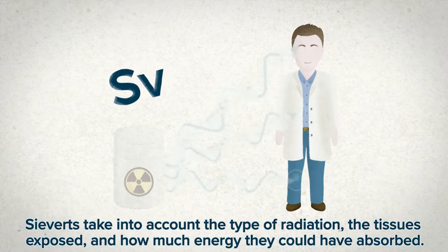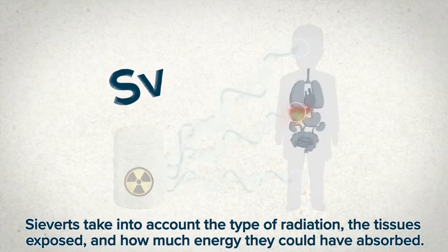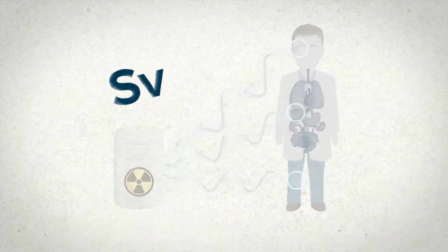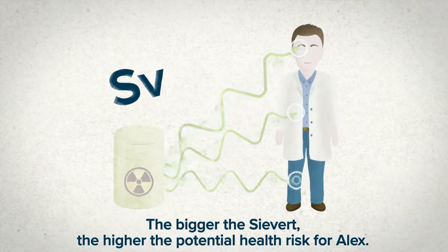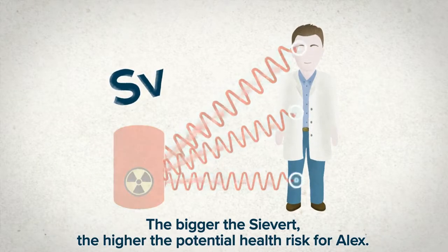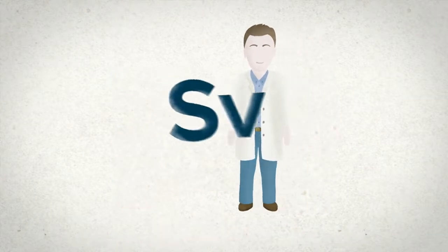Sieverts take into account the type of radiation, the tissues exposed, and how much energy they could have absorbed. The bigger the Sievert, the higher the potential health risk for Alex.